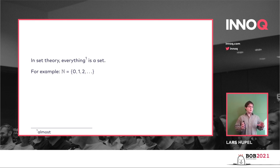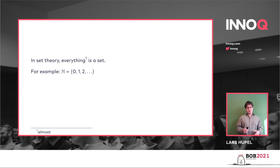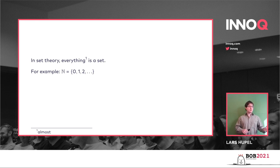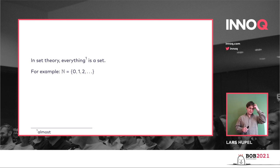For now just imagine that you have some kind of objects, like the natural numbers, and you can put them into some kind of collections — we call those collections sets. Importantly, a set is not necessarily ordered, so elements can appear in an arbitrary order, but you cannot have the same element twice. You only have at most one instance of each element in a set. But sets can also be infinite, as you can see with the natural numbers.